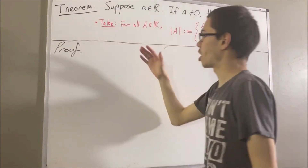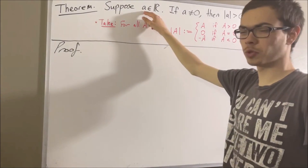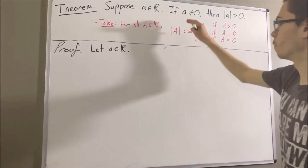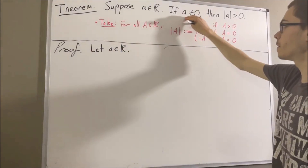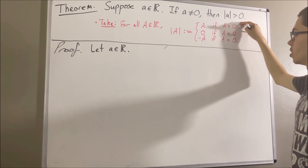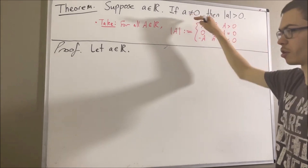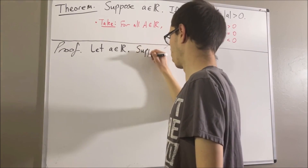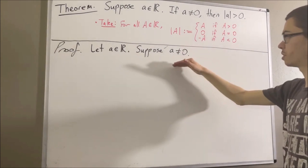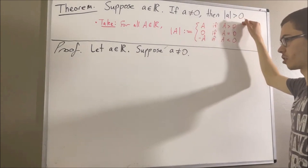To start out our proof, let's give ourselves an arbitrary real number A. Our whole goal is to prove if this is true, then this is true. So let's assume that A is non-zero.